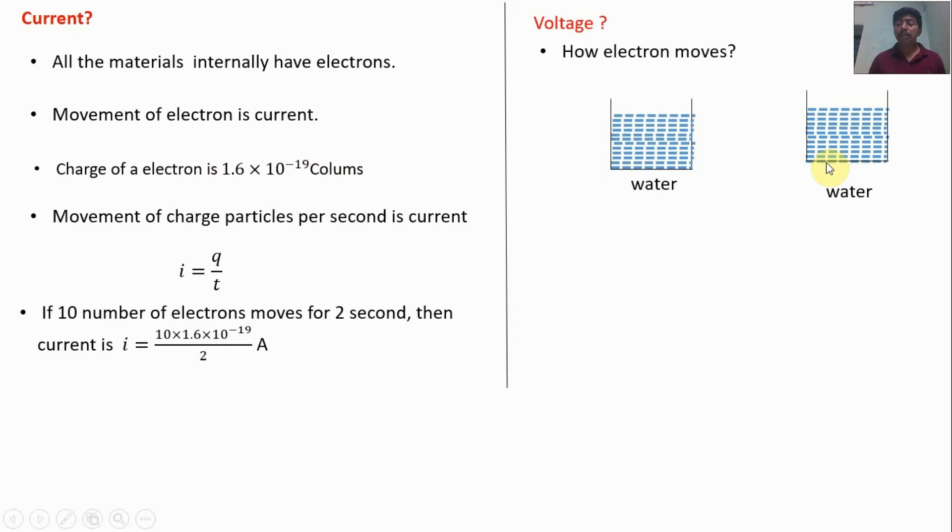If the pipeline is inclined, here the pressure is P2 and pressure is P1, the water will flow from higher pressure to low pressure side. So for water particle movement, some pressure difference is needed. Similarly, for electron movement, some pressure difference is needed. That pressure difference is called as voltage.